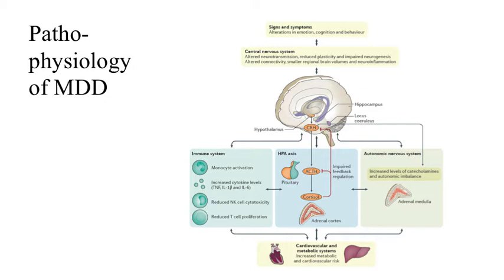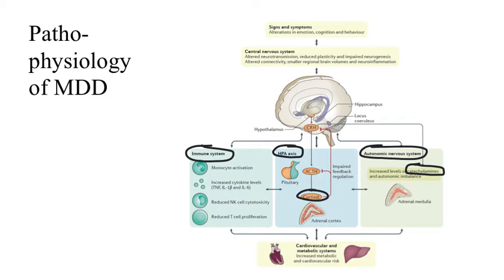In summary, there are many factors that contribute to the pathophysiology of major depressive disorder. The monoamine hypothesis and the neurotrophic hypothesis are not mutually exclusive — the true pathophysiology is likely a combination of all factors. The immune system, the HPA axis and cortisol signaling, and autonomic nervous system function, including catecholamine and monoamine neurotransmitters, all contribute to CNS dysfunction such as altered neurotransmission, reduced plasticity, and impaired neurogenesis. These changes eventually lead to the alterations in emotion, cognition, and behavior characteristic of MDD.